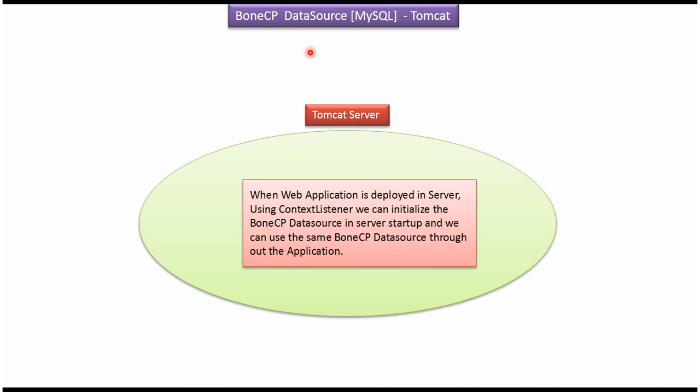In this video tutorial I will cover how to configure BoneCP data source and connect to a MySQL database. When we deploy a web application in Tomcat server, using a context listener we can initialize the BoneCP data source at server startup. We can use the same BoneCP data source throughout the application to get the connection and communicate to the MySQL database.